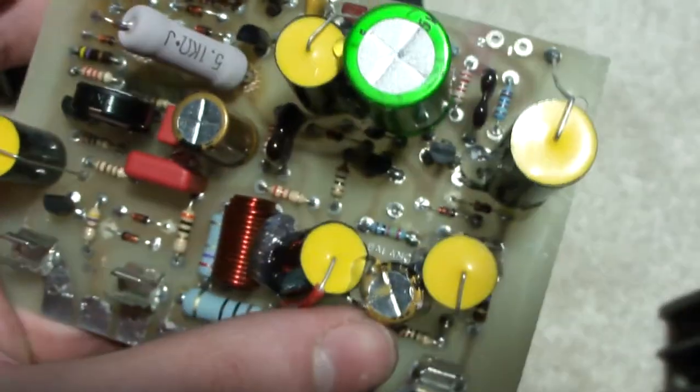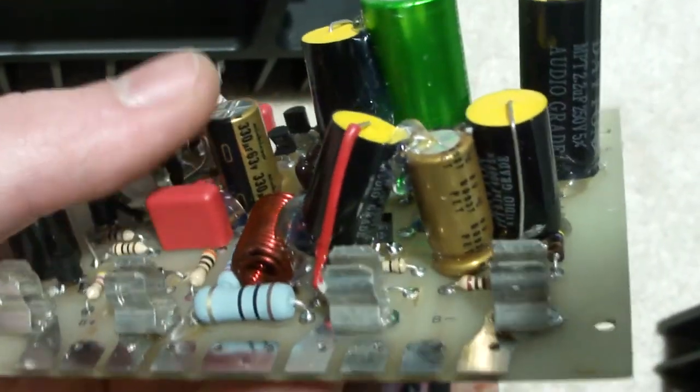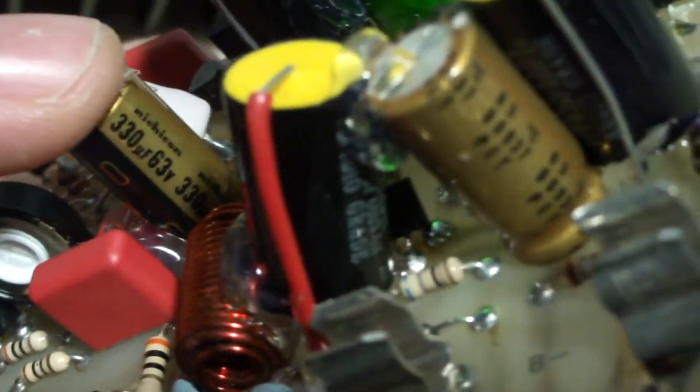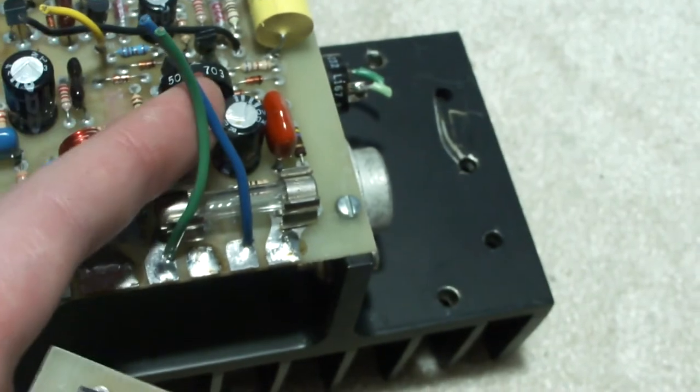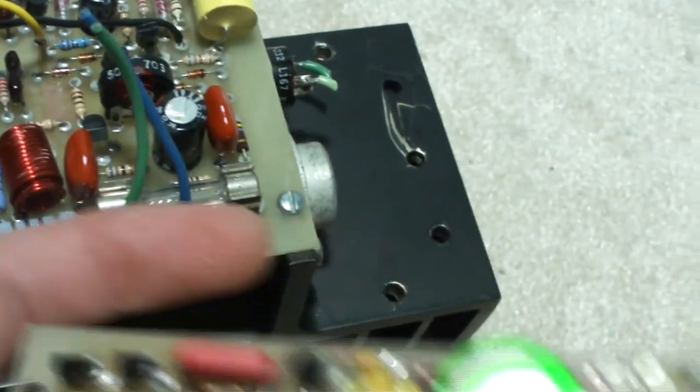Here's some regular Nichicon Audio grade. I was going to use Alps Sonic, but I didn't really feel like placing another order. And as you can see, there's 330 microfarad, 63 volts. These originally are just 100 microfarad 50 volt caps.